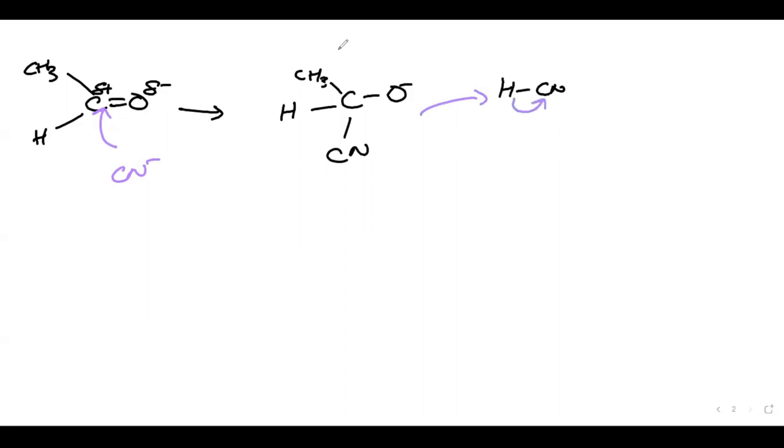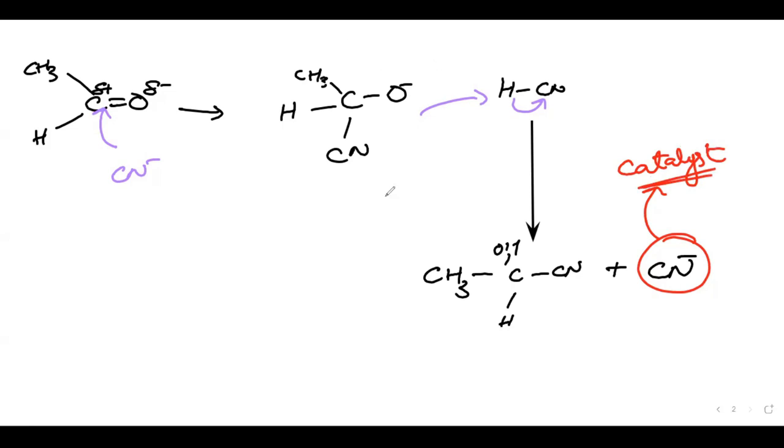CN from HCN adds to give CH3-C-O-H-CN plus CN negative. So this is your final product, showing that CN negative was used as a catalyst. Overall, NaCN and KCN are used as catalysts.